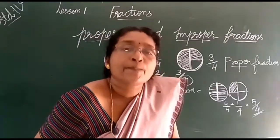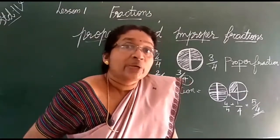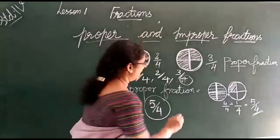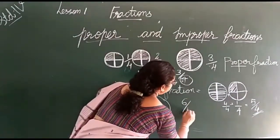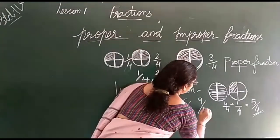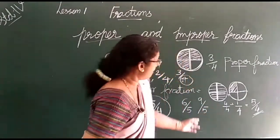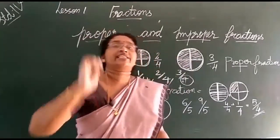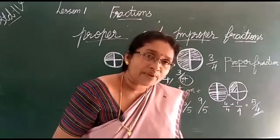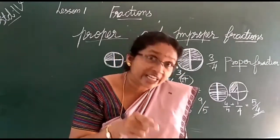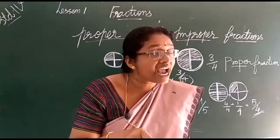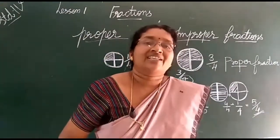That means that is an improper fraction — numerator is greater than the denominator, it is an improper fraction. 6 by 5 is an improper fraction. 9 by 5 is an improper fraction. Numerator is greater than the denominator. In a proper fraction, denominator is greater than numerator. In an improper fraction, denominator is less than numerator. That is the difference.